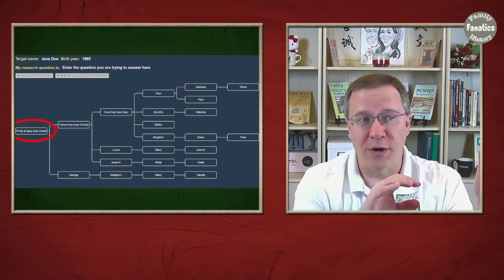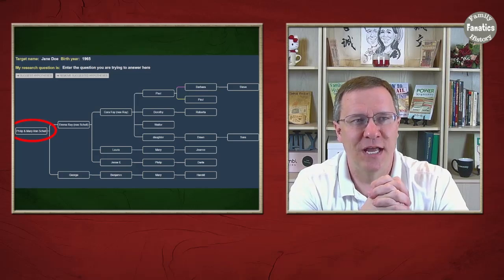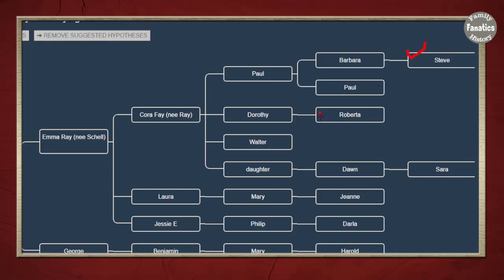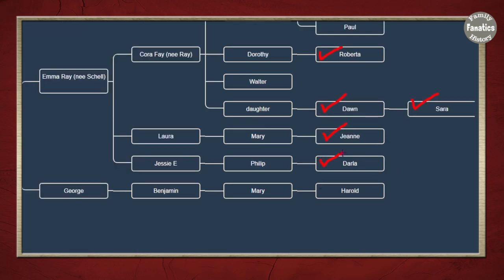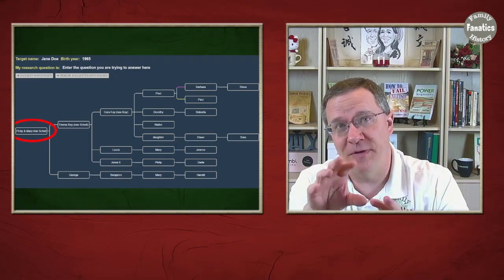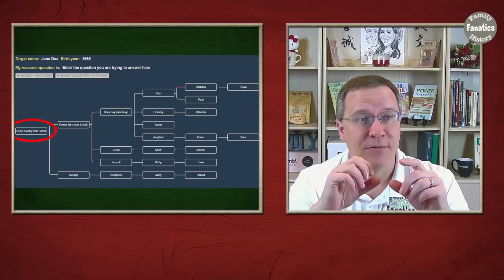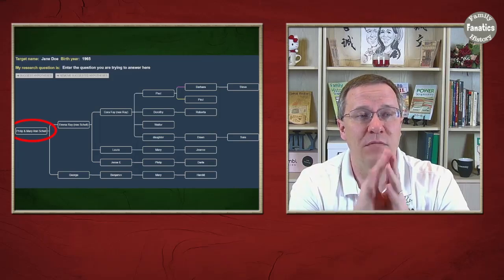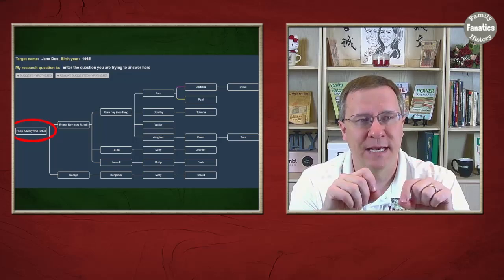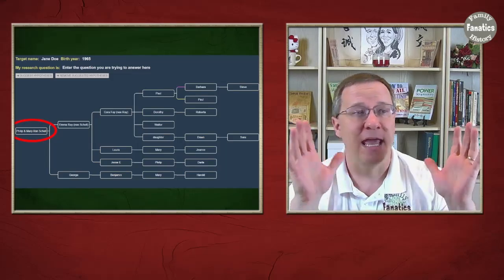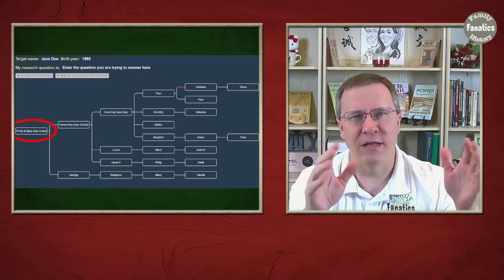In WATO you build the tree actually sideways like this, and you can see here that I've gone through and I filled in everybody that I know. There's Steve and Roberta and Dawn and Sarah and Jean and Darla and Harold. And they all relate back to this ancestral couple Philip and Mary Ann Schnell. This worked because I happened to have found trees for all of these people. There was some other people I added into this tree, some other siblings that were not on their trees but because of some other tree information I was able to add that in.